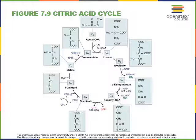Then succinyl-CoA will be converted to succinate. In this process, a GDP will become phosphorylated by an inorganic phosphate to produce GTP, and coenzyme A will be released as succinate is formed. GDP and GTP are very similar to ADP and ATP, and we can convert GTP into ATP, so we will count GTP as being equivalent to ATP.